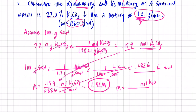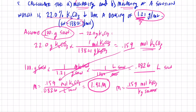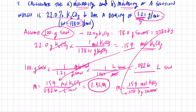For molality, moles of K₂CO₃ is 0.159, divided by kilograms of solvent (water). If I have 100 grams of solution and take away 22.0 grams of solute, I'm left with 78.0 grams of solvent, which is 0.0780 kilograms. Molality = 0.159 ÷ 0.0780 = 2.03 molal.